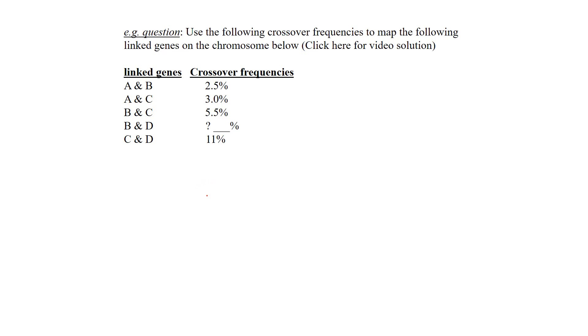When we have a question like this, it's always good just to put a chromosome on there. We're going to map where A, B, C, D—the sequence of A, B, C, D—on this chromosome is.